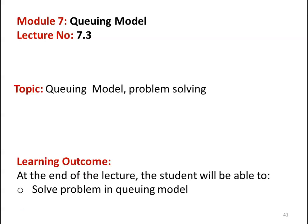This is lecture number 7.3 in the queuing model. In the earlier two lectures, we discussed the queuing model and the single channel queuing model, and we solved problems in the single channel queuing model. In this lecture also, we continue with the single channel queuing model with different conditions and we will solve problems.